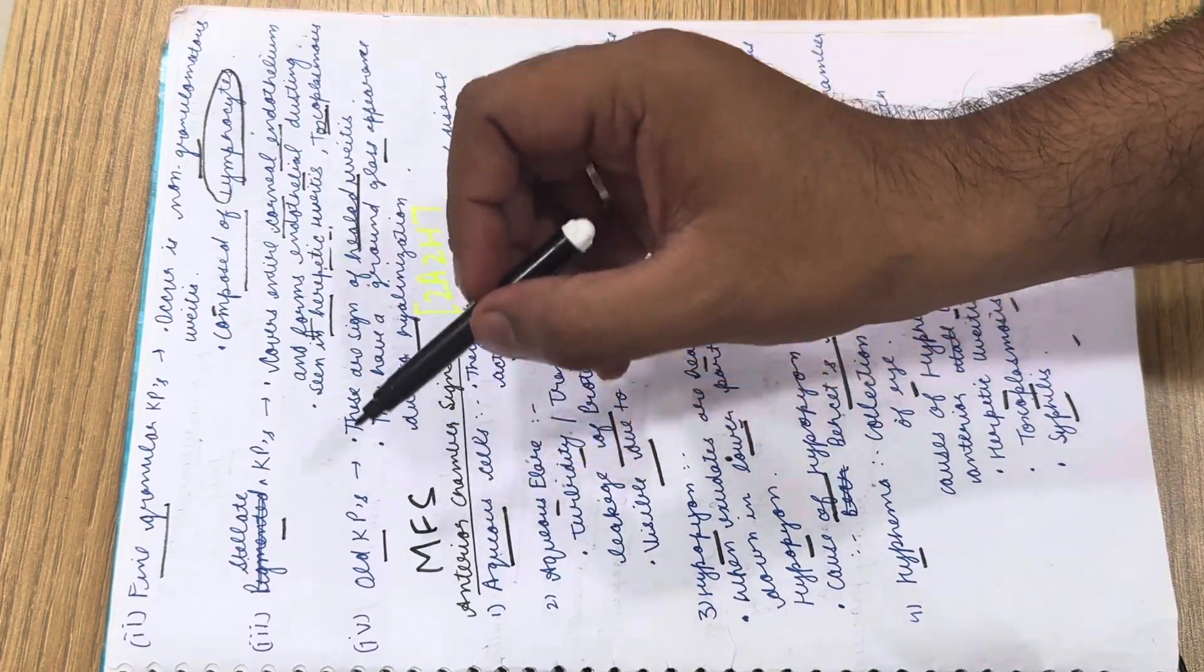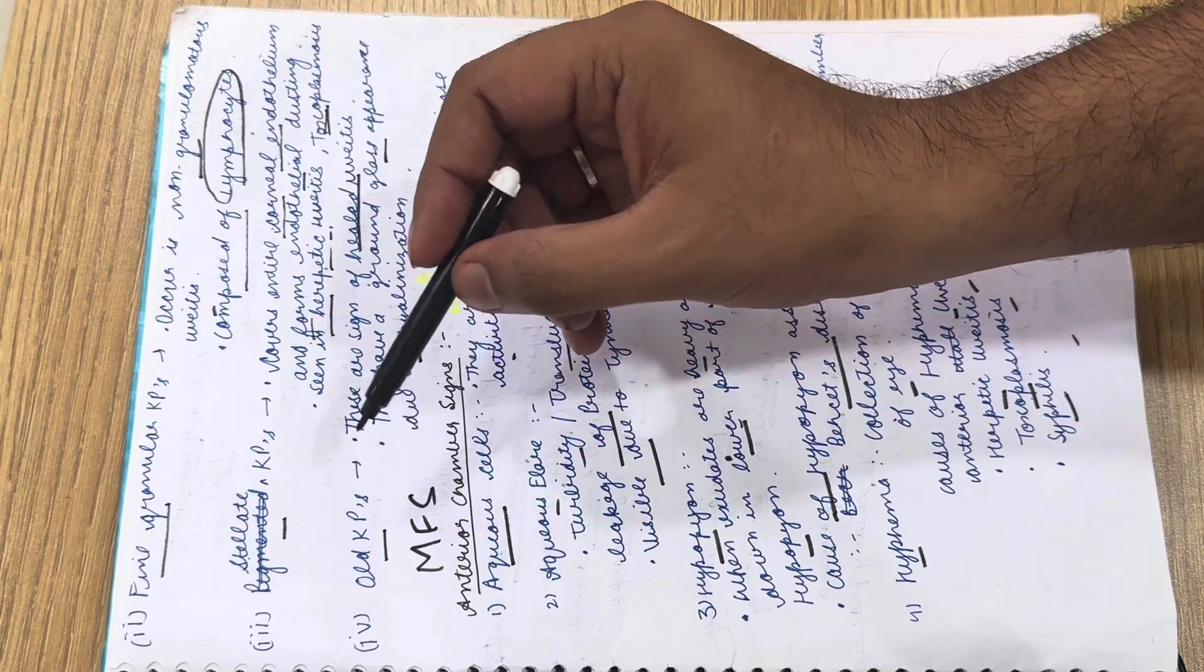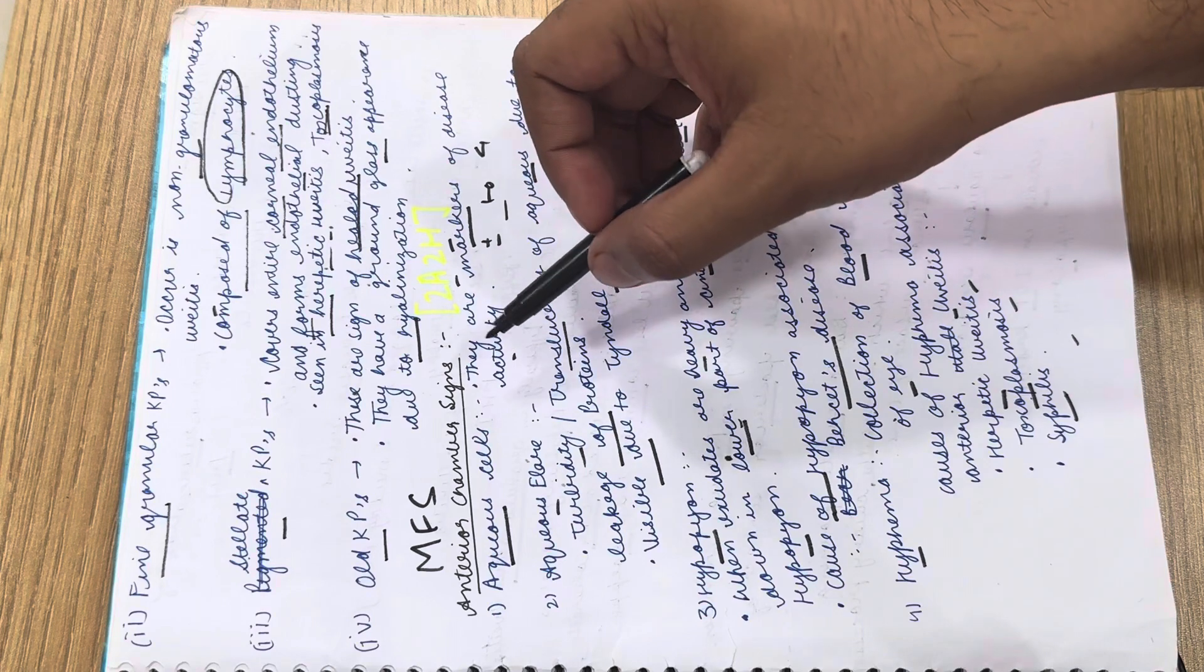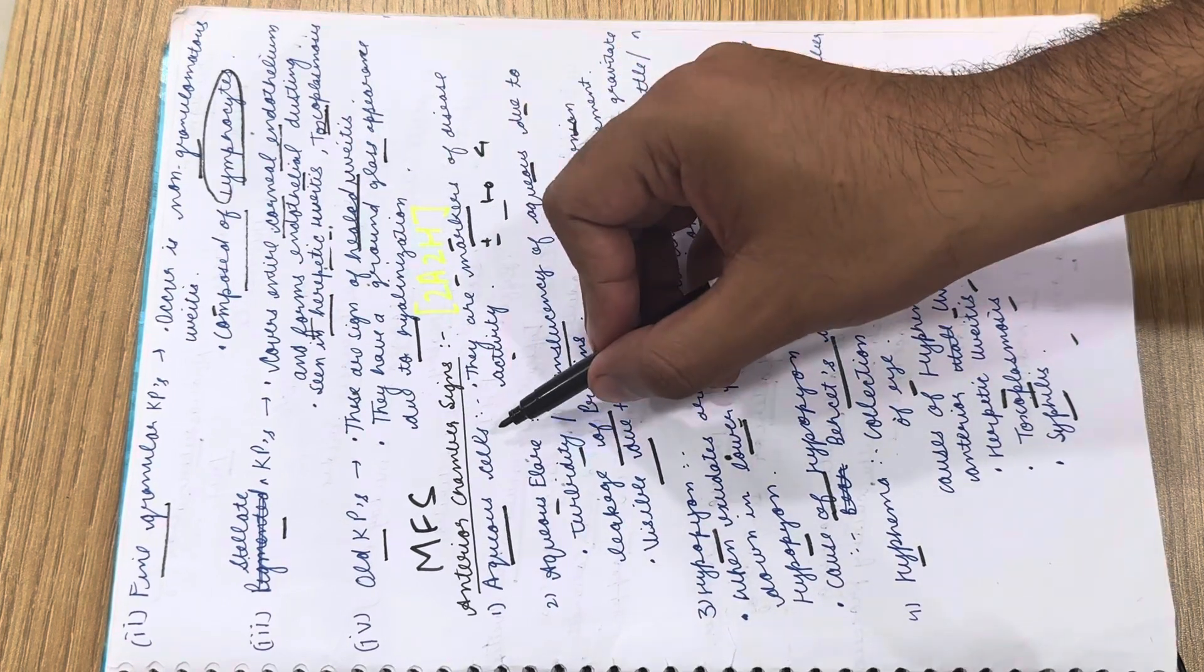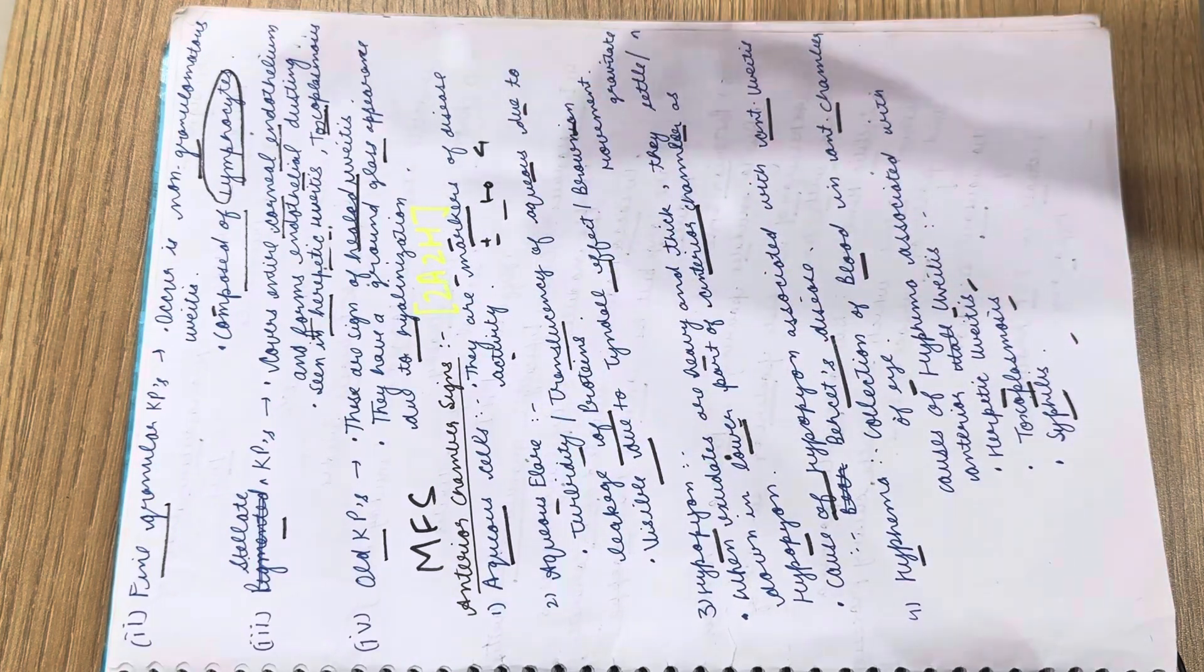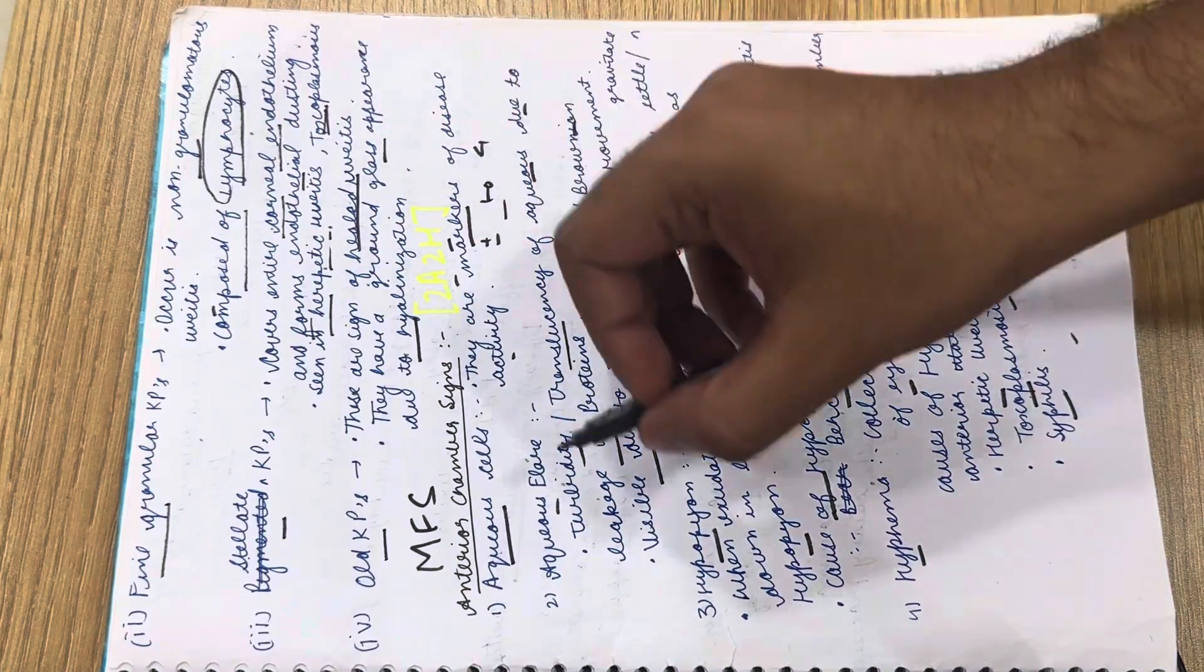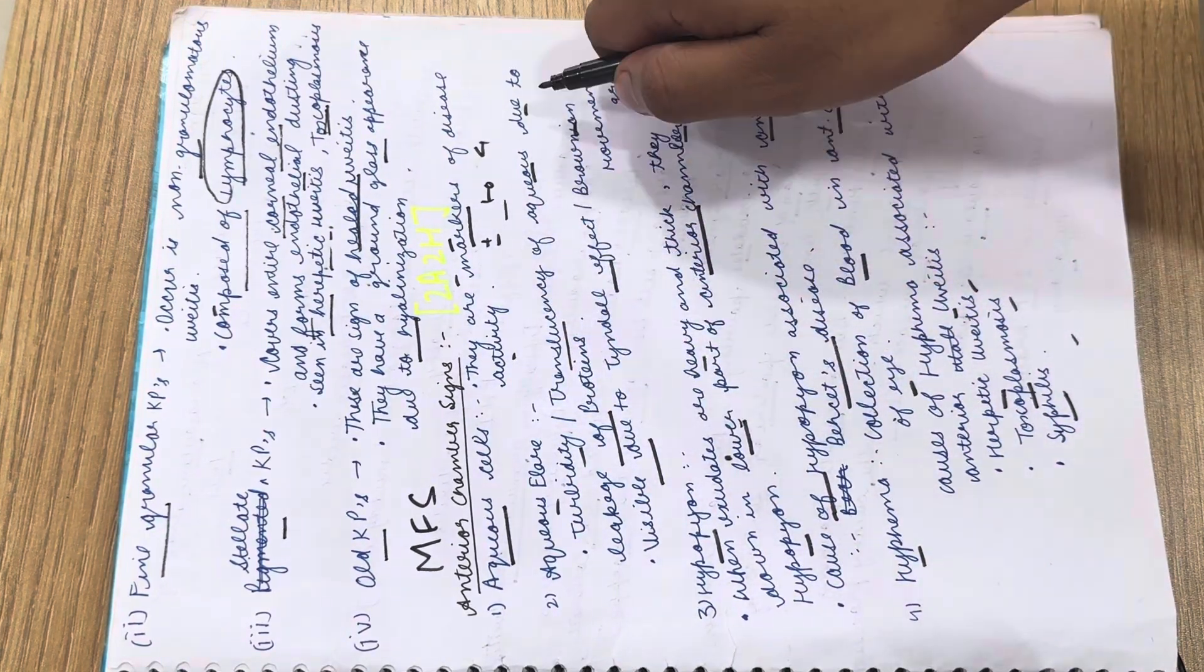The anterior chamber signs can be remembered by 2A and 2H. The 2A stands for aqueous cells and aqueous flare. Aqueous cells are markers of disease activity and can be graded from plus-minus to four-plus. Aqueous flare is the turbidity or translucency of the aqueous due to leakage of proteins, visible by Tyndall effect.